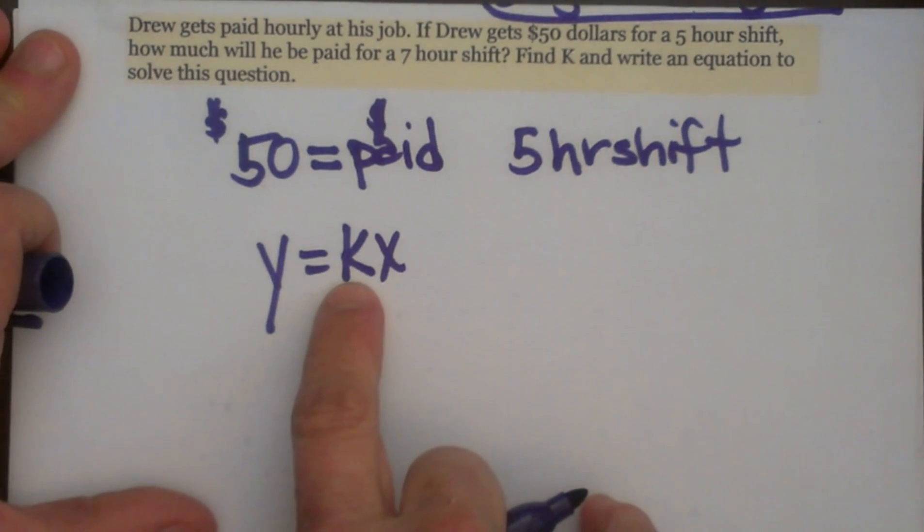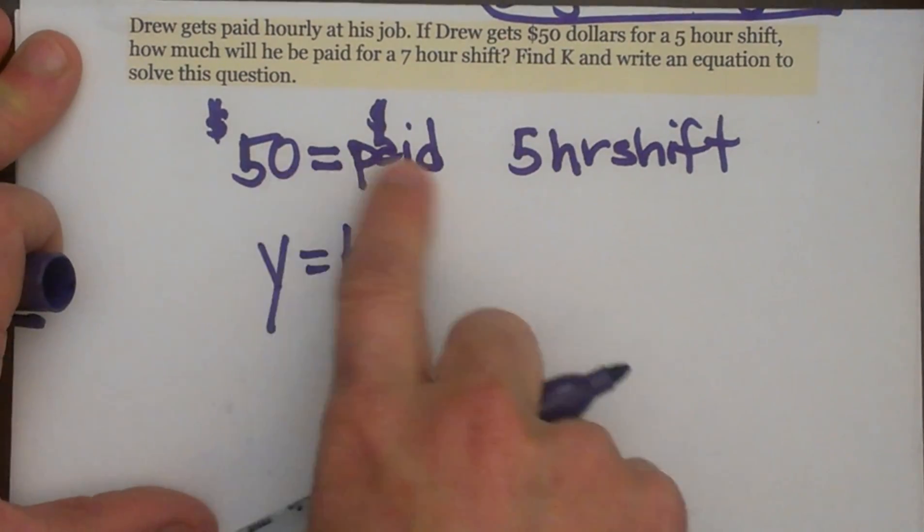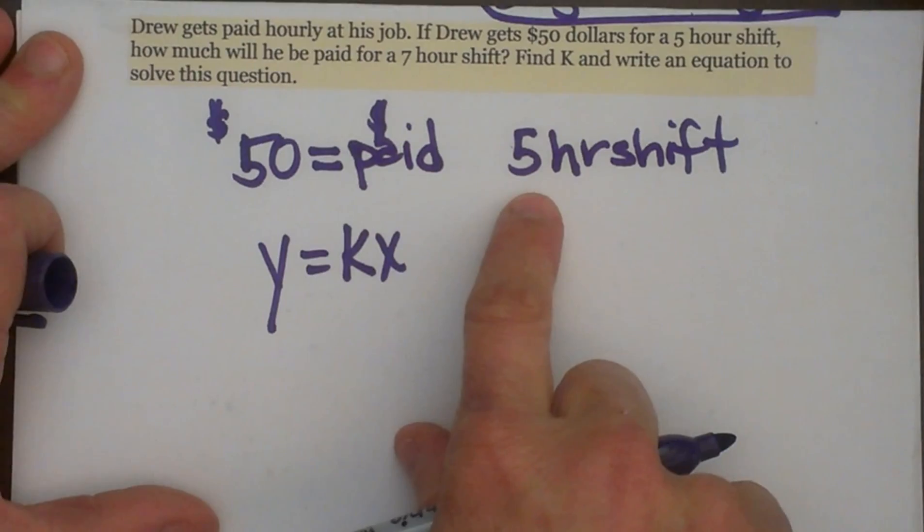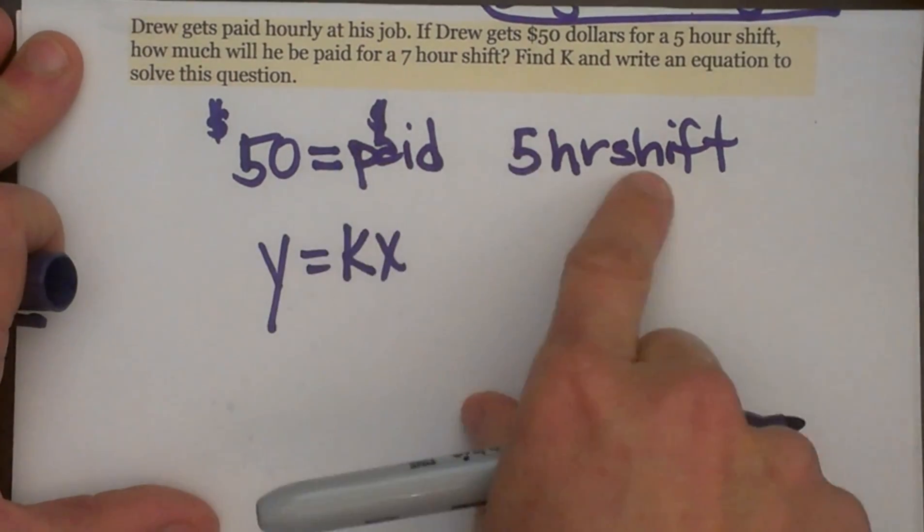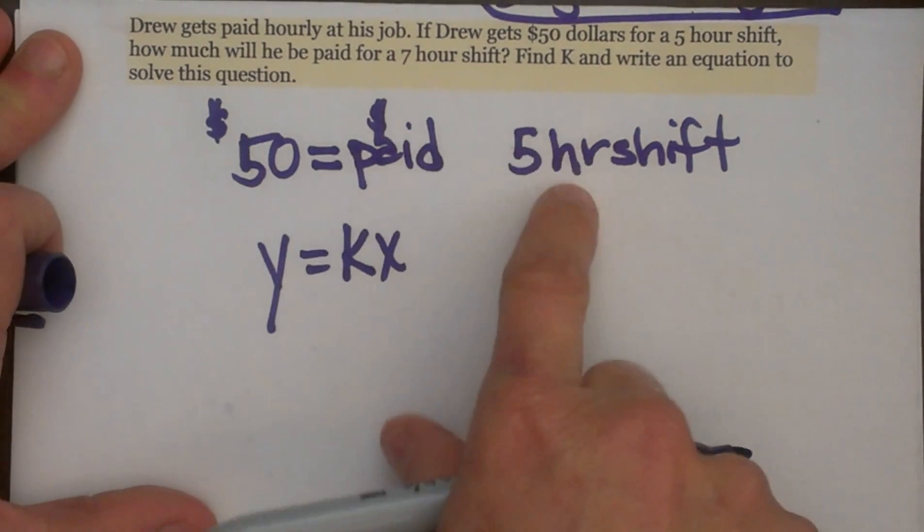So we have to figure out what we have and what we are trying to figure out. If he gets $50, he is paid $50 and he is working a 5 hour shift, which one is X and which one is Y? Well, the Y is dependent on X.